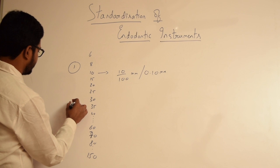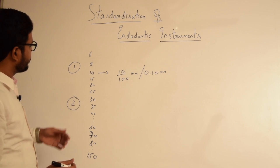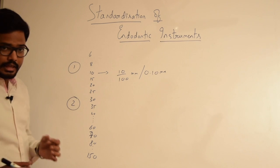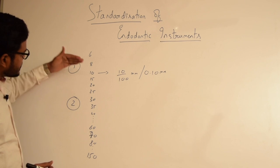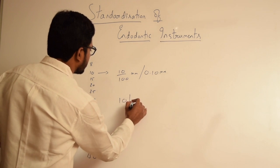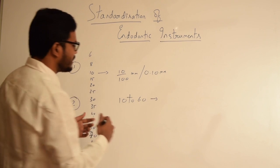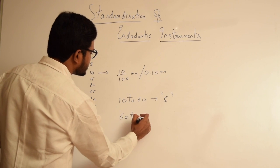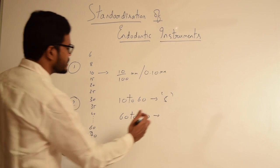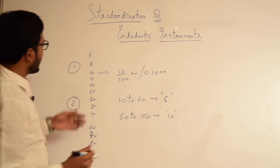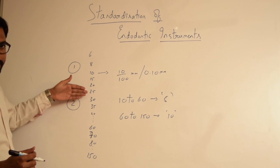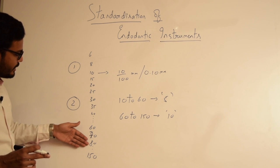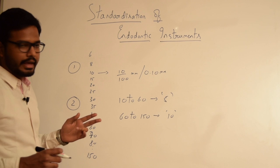Secondly, there is a definite increment in the diameter of the instrument as the size progresses. They suggested that from sizes 10 to 60, the increment for each consecutive size has to be 5 units. And from size 60 to 150, the increment in sizes has to be 10 units — that is, 10, 15, 20, 25 etc. till 60, then 70, 80 till 150 with increments of 10 units. That is the second recommendation made by Engel and Levine.